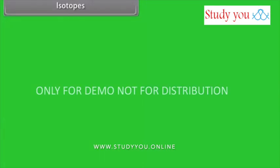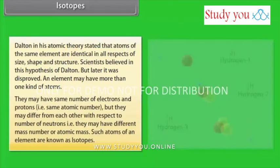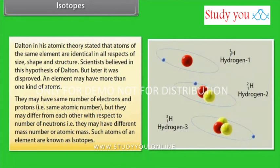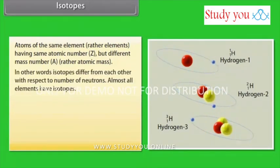Isotopes. Dalton in his atomic theory stated that atoms of the same element are identical in all respects of size, shape and structure. Scientists believed in this hypothesis of Dalton but later it was disproved. An element may have more than one kind of atoms. They may have same number of electrons and protons, that is same atomic number, but they may differ from each other with respect to number of neutrons, that is they may have different mass number or atomic mass. Such atoms of an element are known as isotopes. Atoms of the same element having same atomic number Z but different mass number A. In other words, isotopes differ from each other with respect to number of neutrons. Almost all elements have isotopes.